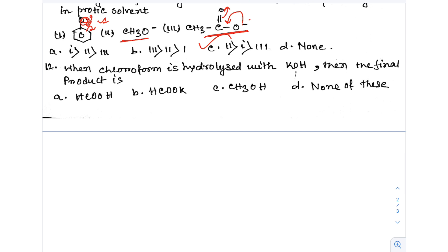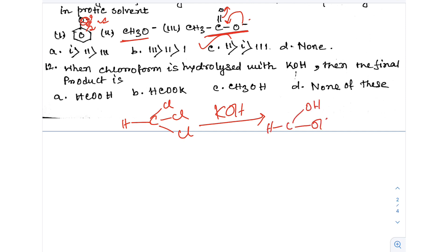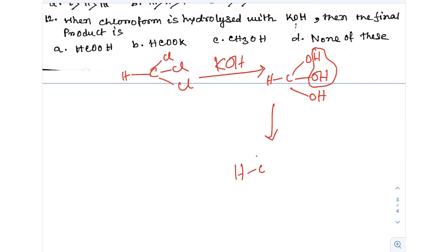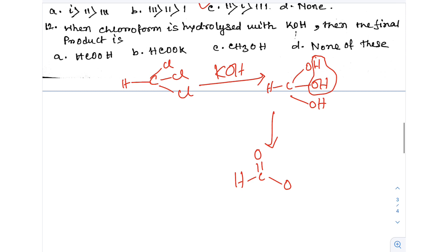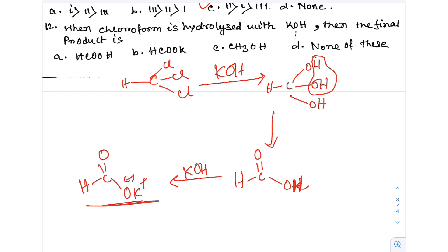Next question: When chloroform is hydrolyzed with KOH, the final product is HCOO⁻ (formate). When the proton form is hydrolyzed with H⁺, then with KOH, the product is HCOO⁻. Option B is the correct answer.